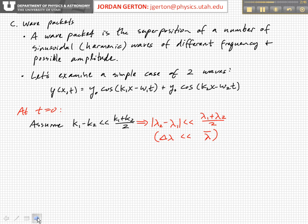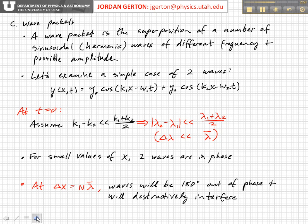So if we assume that this is true and we've basically frozen time, then what we can understand is that at small values of x—again, we're looking now at just the spatial variations, we've frozen time—so for small values of x, the two waves, if we assume that they're in phase at x equals zero.